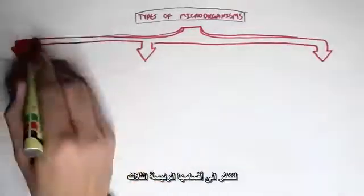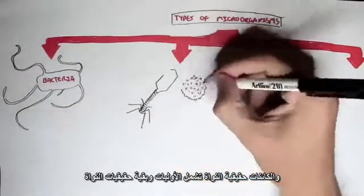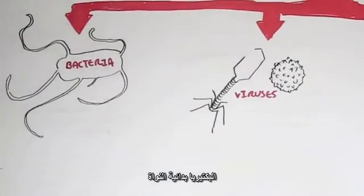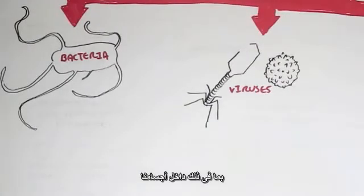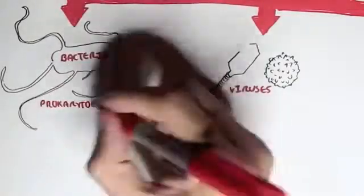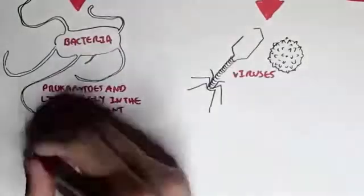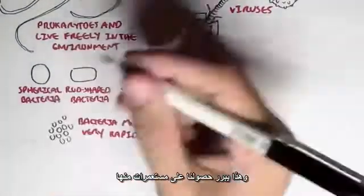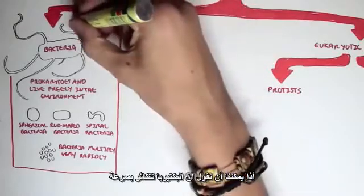Now let's look at some types of microorganisms — three main categories: bacteria, viruses, and eukaryotic organisms (protists and other eukaryotes). Bacteria is a prokaryote and lives freely in the environment — we find it literally everywhere, including inside our body. Bacteria can be classified by structure: spherical, rod-shaped, or spiral. An important thing to know is that bacteria multiply very rapidly, which is why if we put a sample inside a petri dish, we can see bacteria form colonies within a few days.